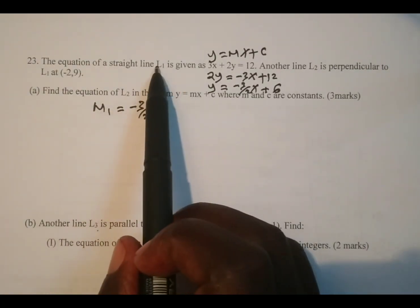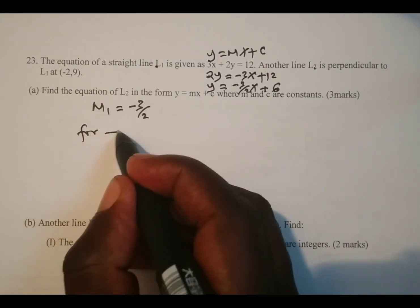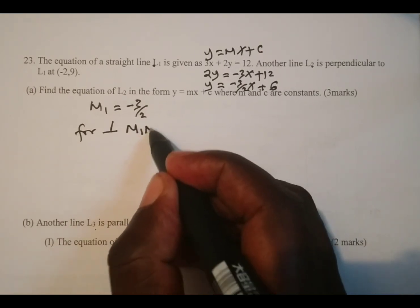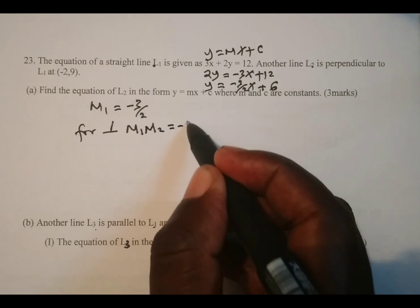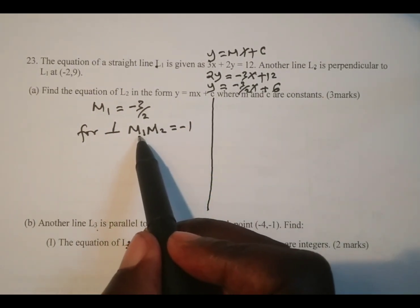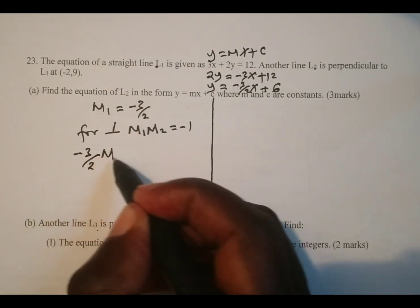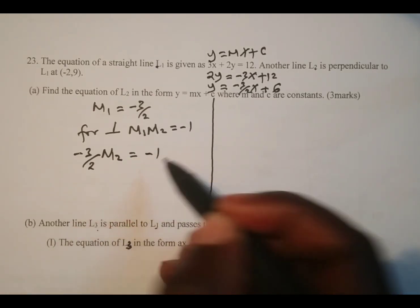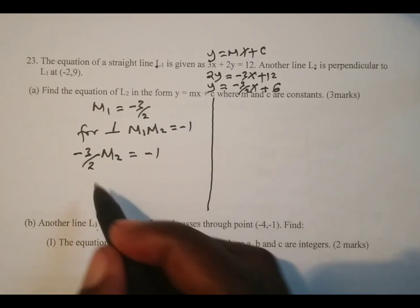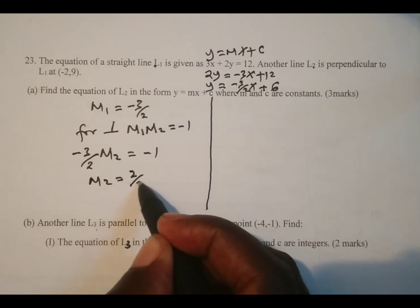We have been told that L1 and L2 are perpendicular. For perpendicular lines, the product of the gradients m1 multiplied by m2 always equals negative 1. So negative 3 over 2 multiplied by m2 equals negative 1. Dividing both sides by negative 3 over 2, m2 is equal to positive 2 over 3.